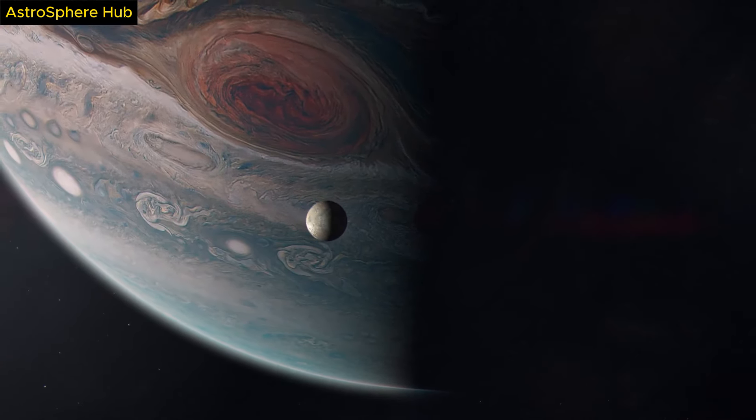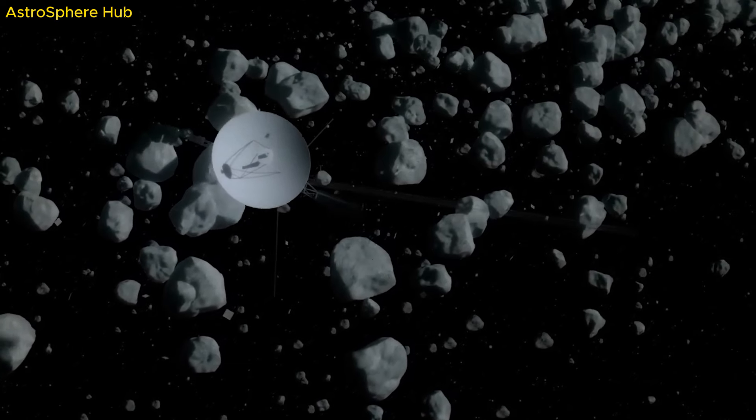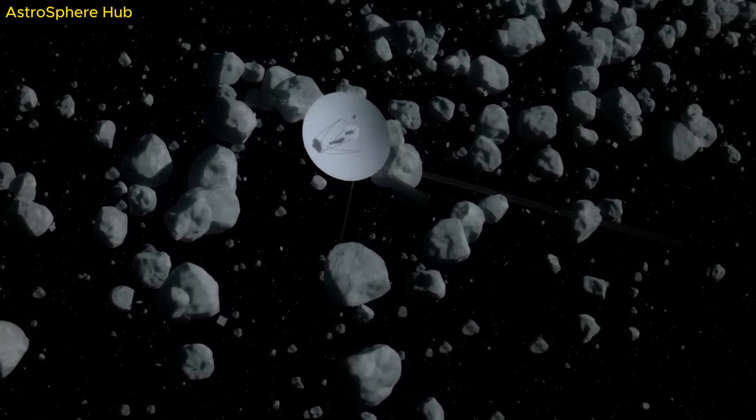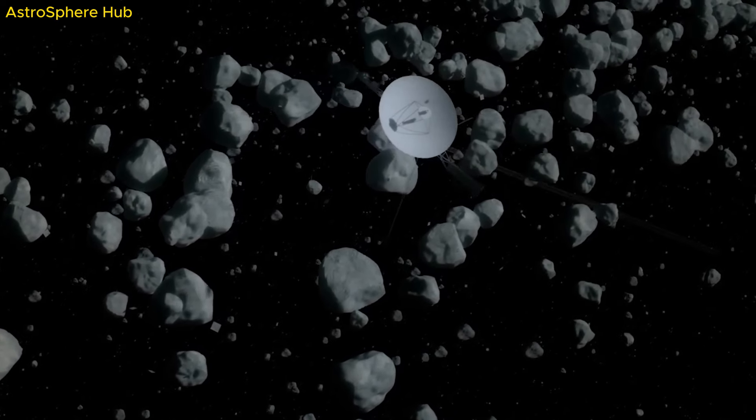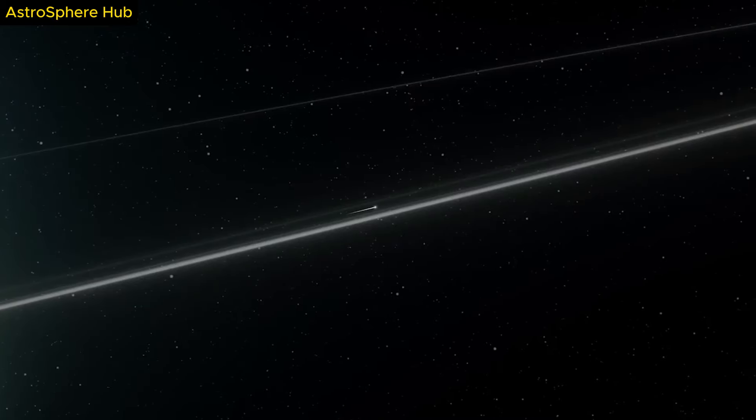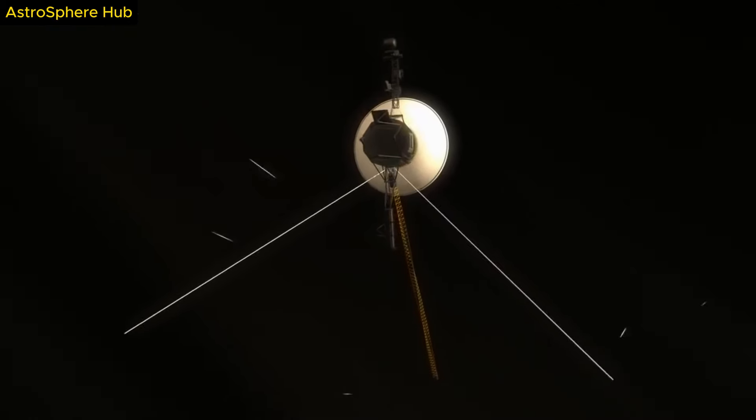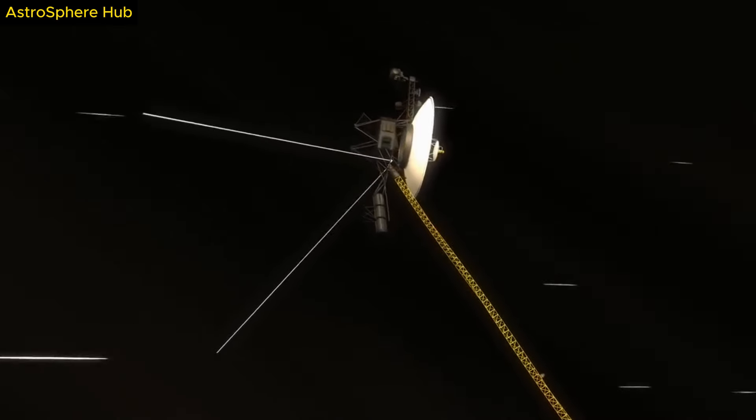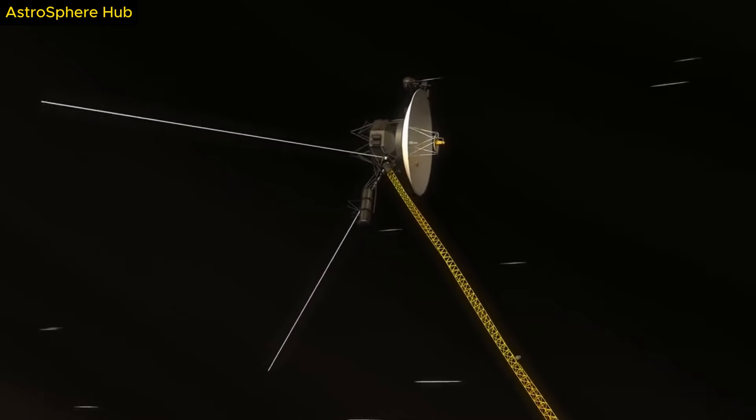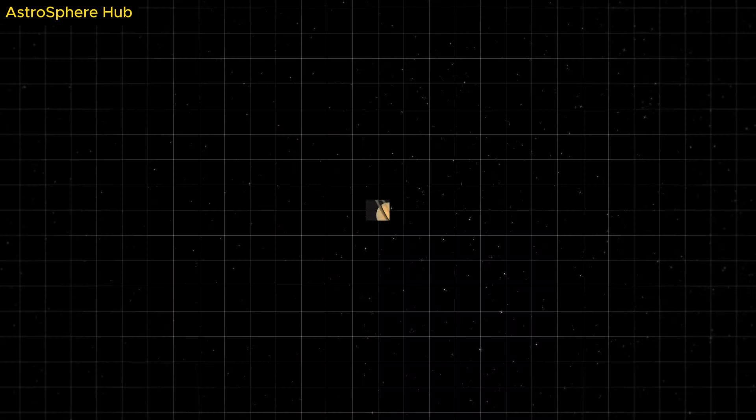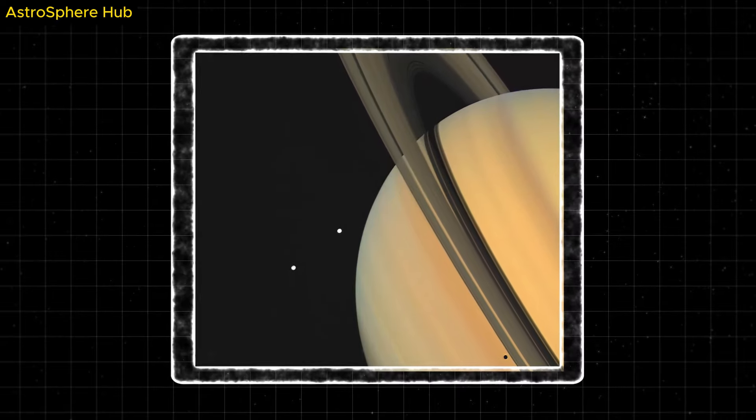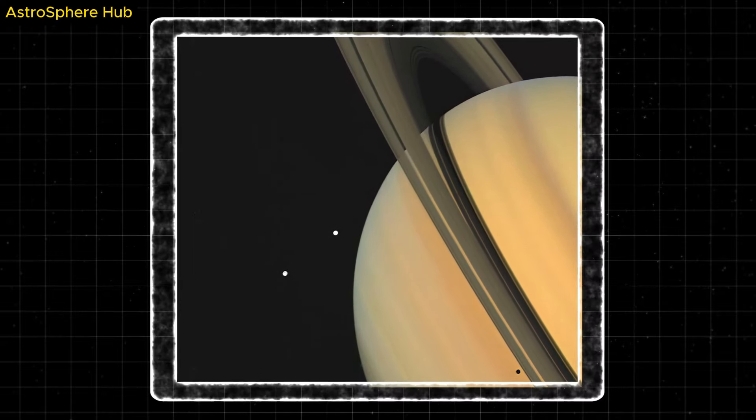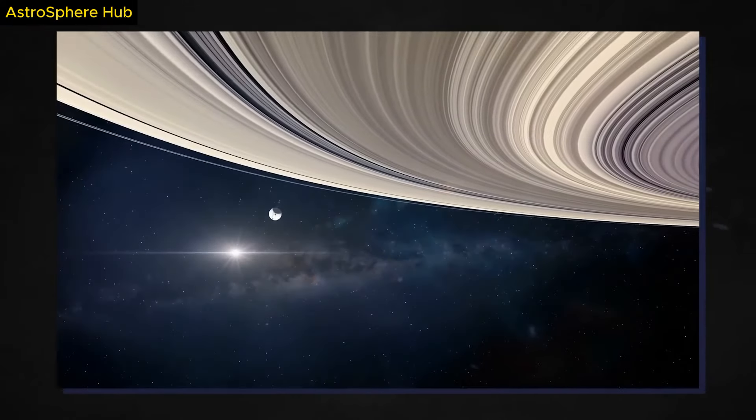The flight data system of Voyager 1 is made up of various components working together to manage the spacecraft's operations. This includes the central computer, data storage units, command interface, and telemetry systems. The primary computer aboard Voyager 1 is the command and data subsystem, CDS, which processes commands sent from Earth and manages the spacecraft's functions. In case you're not familiar with the computers aboard the Voyagers, you'll want to see this.